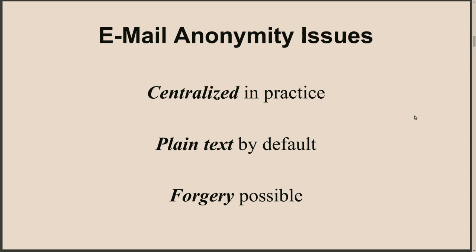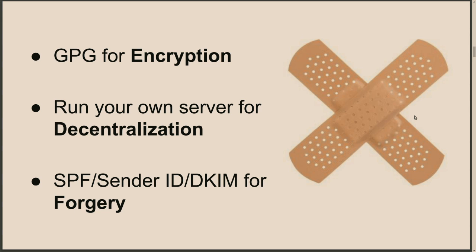So let's put some Band-Aids on it — because that's what we do when software doesn't work. For plain text: GPG for encryption. Even if somebody intercepts the email, it's encrypted — they can't read it. For centralization: run your own email server to decentralize. For forgery: we have SPF, Sender ID, DKIM, and whatever alphabet soup anti-forgery schemes companies are pitching these days. These are all potential solutions — let's take a look at them, starting with GPG.